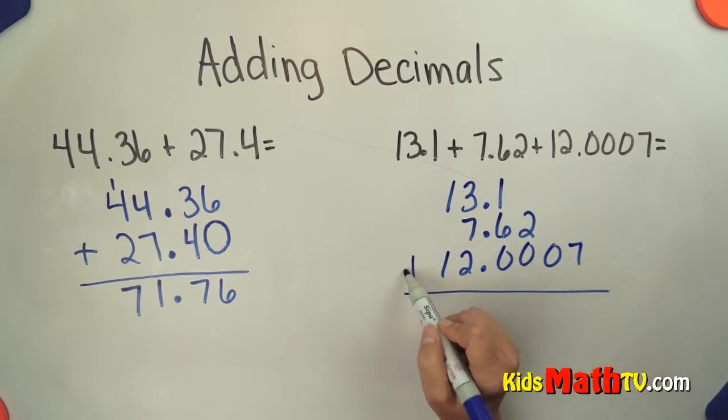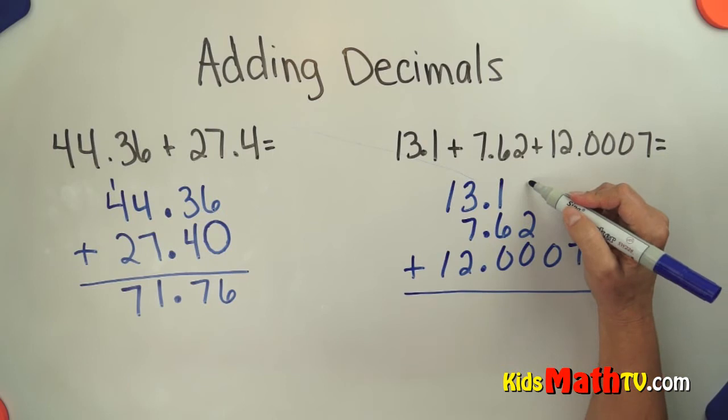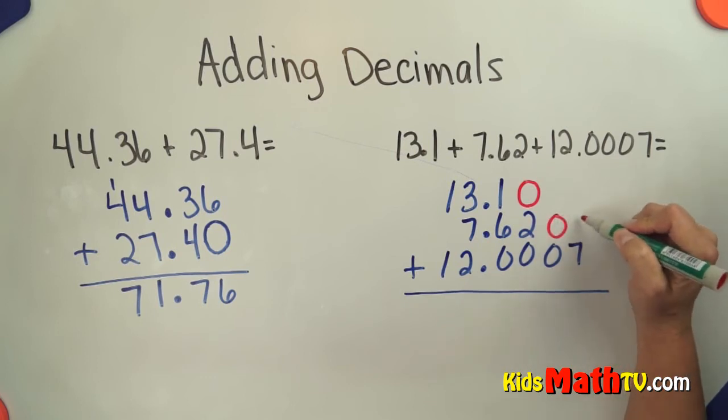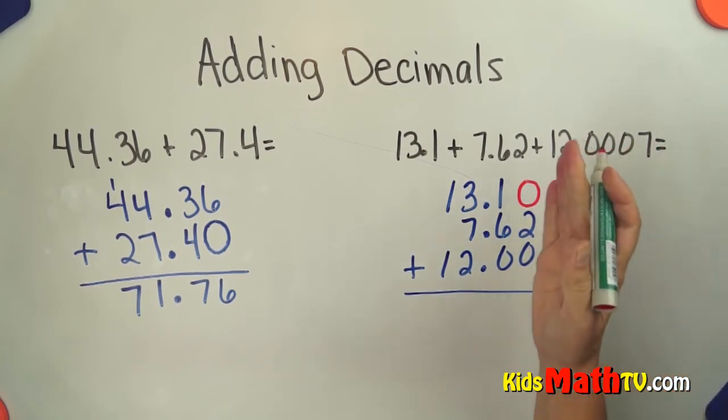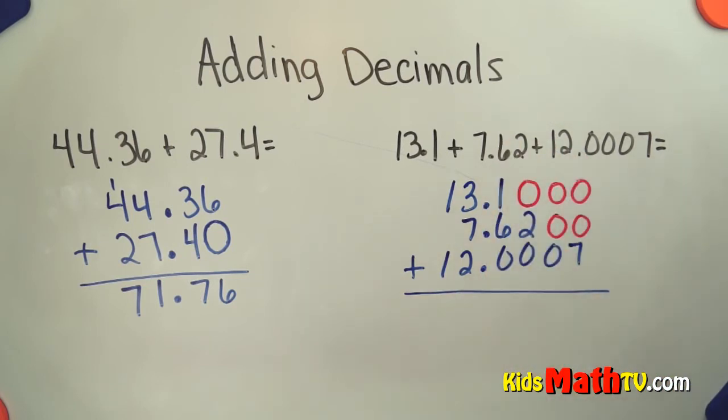So in order to help me keep everything lined up I'm going to go back and put in placeholder zeros. So I'll even make those a different color. Placeholder zero there. Placeholder. Placeholder. Placeholder. Placeholder. That helps keep things lined up so you don't get mixed up.